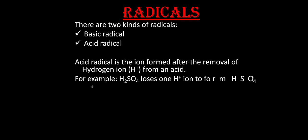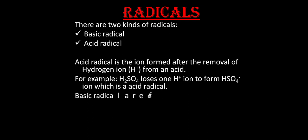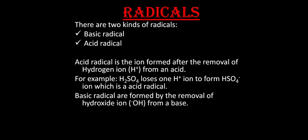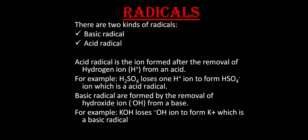For example, H₂SO₄, if it loses one H⁺ to form HSO₄⁻, that negative ion is the acid radical. In a very similar way, basic radicals are formed by the removal of the hydroxide ion (OH⁻) from a base. For example, KOH loses OH⁻ to form K⁺, which is the basic radical. In simple terms, negative ions are the acid radicals and positive ions are the basic radicals.